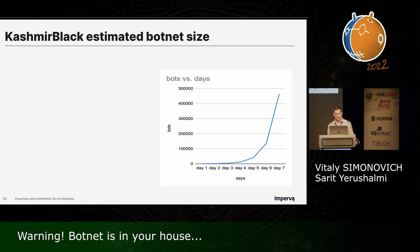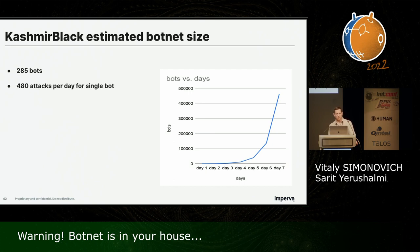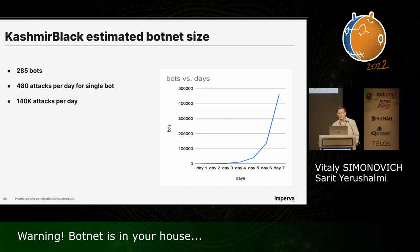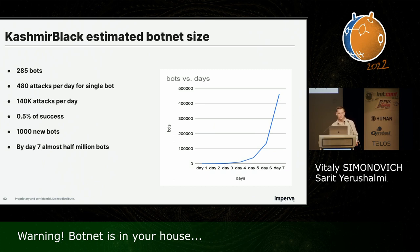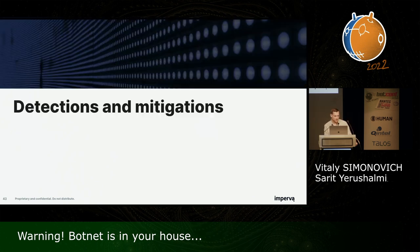We observed 285 bots attacking our customers, which is only a portion of total botnet traffic. Rounding to 300, and knowing each bot communicates with the C&C every three minutes, each bot carries out 480 attacks per day. So 300 bots generate 140,000 attacks per day. If only half a percent are successful, the next day we'd have 1,000 new bots, and by day seven, potentially 1 million bots. Of course, in reality we have a limited number of targets, so exponential growth would stop at some point.